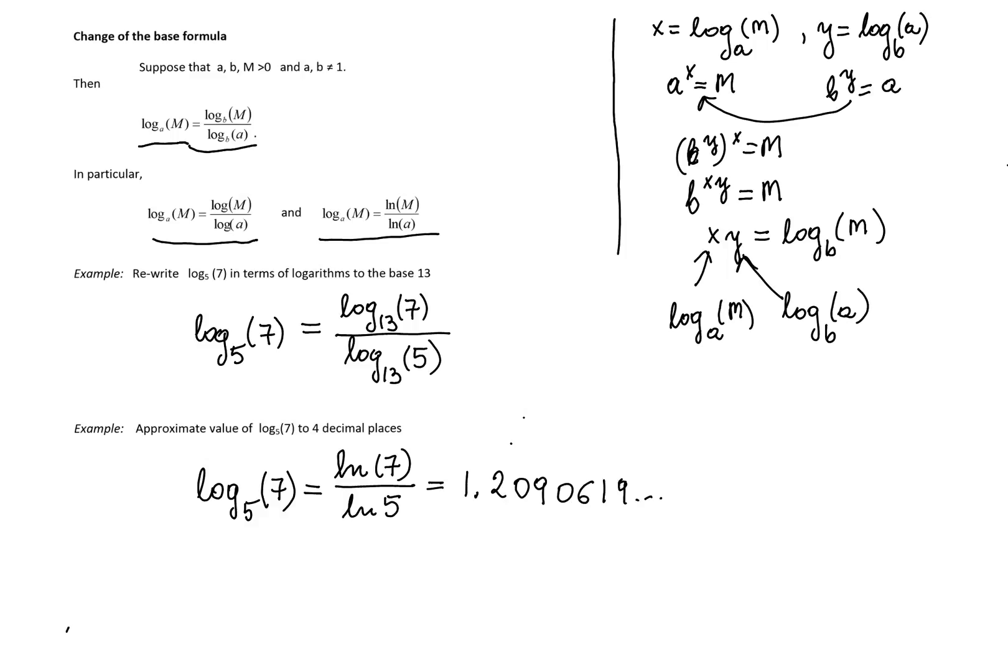Since we want to approximate it to 4 decimal places, we'll look at the first 4 decimals, and we'll see that since the fifth digit is 6, we need to round up and put 1 at the end, and this gives us the desired approximation of 1.2091.